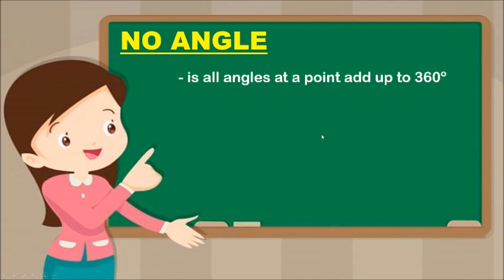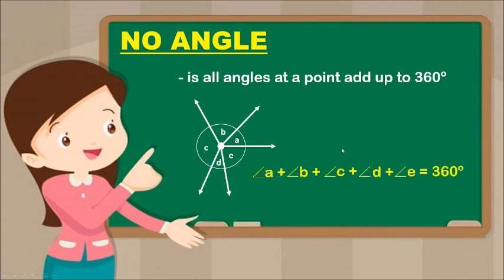Full angle, also called no angle, is when all angles at a point add up to 360 degrees. For example, Angle A plus Angle B plus Angle C plus Angle D plus Angle E — if the answer is 360, it is called a full angle, or no angle.